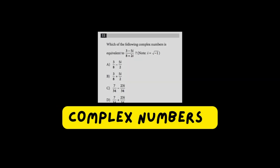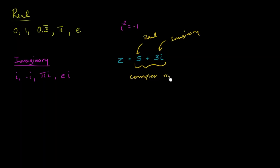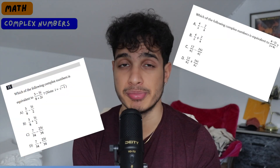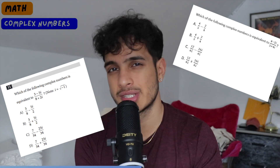Complex numbers is the second big math question type I want you to focus on. It's not that common — you're probably going to face two to three questions on it — but those are still multiple points. These questions are very simple; they usually ask you to put an expression into a + bi form, or ask what i squared is, something like that.